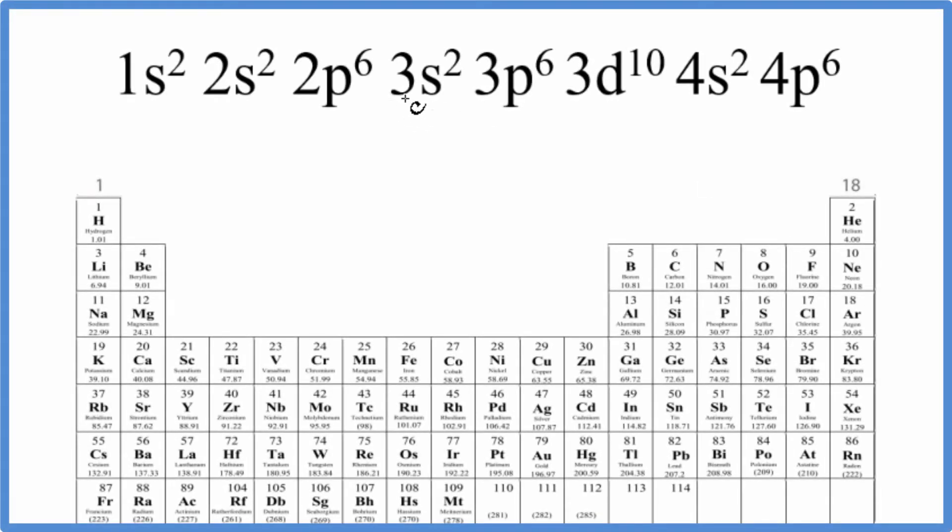There are two ways to figure out which element is represented by this electron configuration on the periodic table. The first way is to count up all of these electrons and figure out how many we have for this configuration. When we do that, we see we have a total of 36 electrons for this electron configuration.